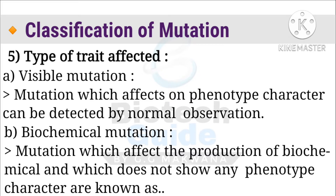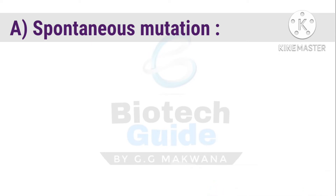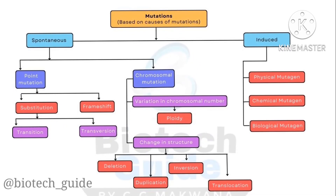Now we come to our main topic: spontaneous mutation, classified under causes of mutation. Spontaneous mutation occurs naturally without any cause, and the rate is very slow — specifically in prokaryotes, whereas in eukaryotes the rate is higher. In the flowchart, spontaneous mutation is classified into two sub-types: point mutation and chromosomal mutation. Point mutation is further classified into substitution and frameshift. Chromosomal mutation is classified based on variation in chromosomal number or change in chromosomal structure.